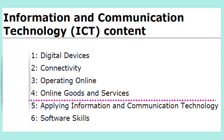The main units in the syllabus are Topics 1, 2, 3, and 4 — Digital Devices, Connectivity, Operating Online, and Online Goods and Services — and these are for the written paper, which is Paper 1. Topics 5 and 6 — Applying ICT and Software Skills — are practical lessons and they will come in your practical paper, which is Paper 2. Let's see what we have to cover in these six units at a high level before we dive into the lessons.